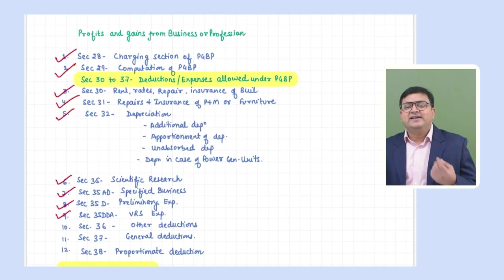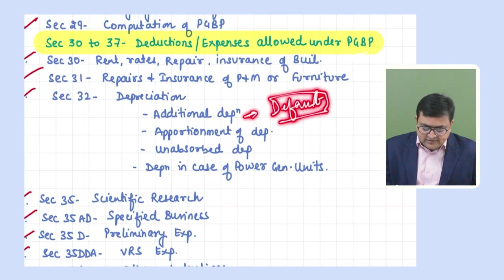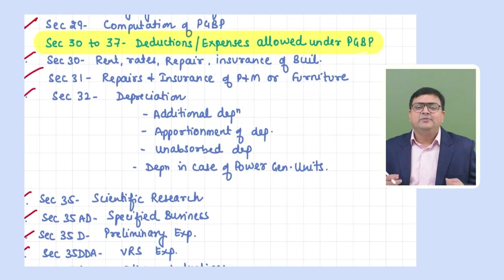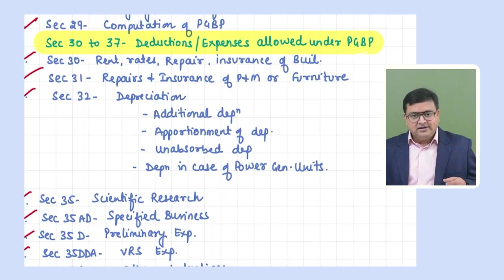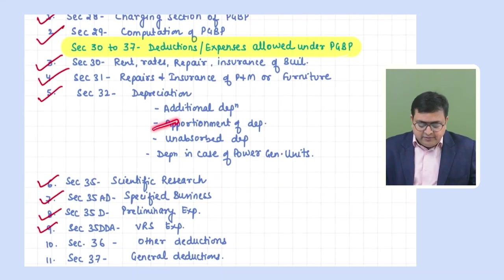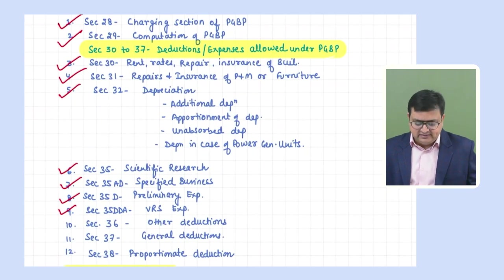Section 32 is depreciation. Remember: additional depreciation is not allowed under the default scheme — it is only allowed under the optional scheme. Additional depreciation is 20% of actual cost of the asset, but if the asset is used for less than 180 days, only 10% is allowed in that year and the remaining 10% in the next year.